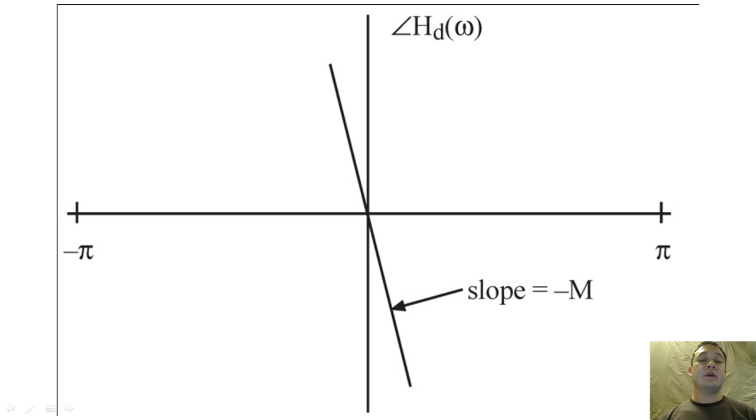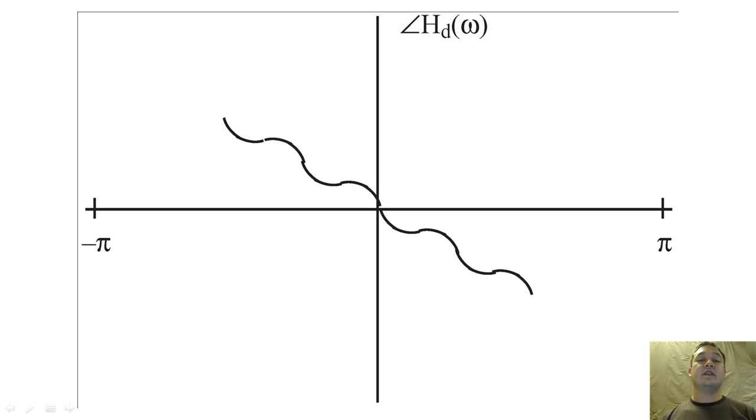In general, we want all of our filters to have this negatively sloped linear phase. If the phase of the filter is non-linear, then the output will not resemble the output of the ideal low-pass filter, because every cosine will be delayed by inconsistent amounts.